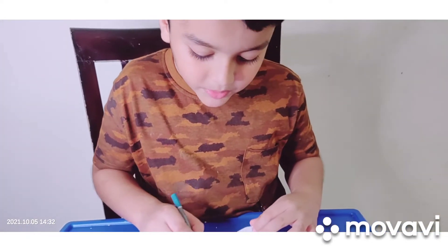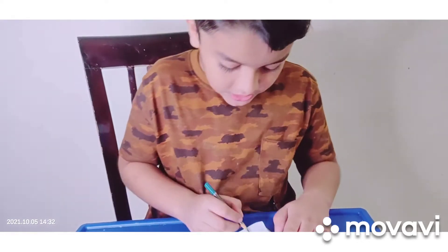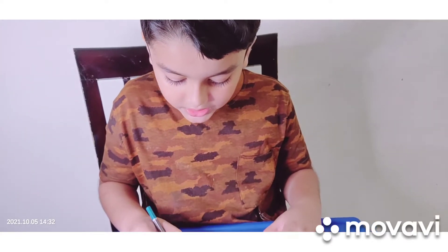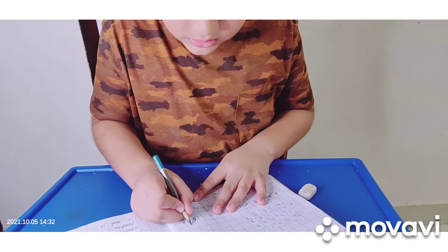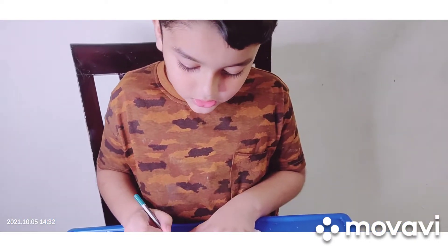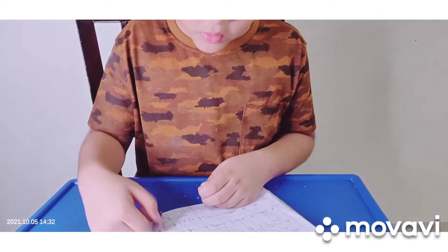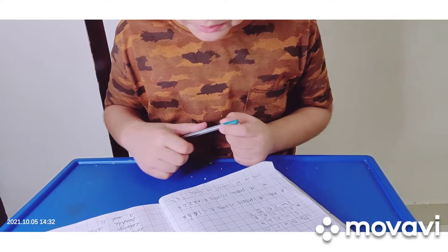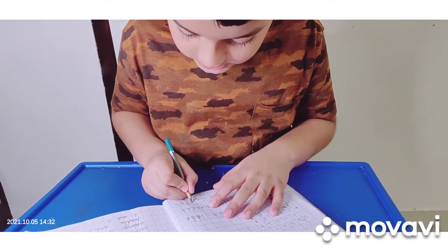Number of people in colony A is 1,656. Number of people in colony B is 1,326. Total number of people in colony A and B: 6 plus 6 is 12. 5 plus 2 is 7, but 1 carry is 8. 6 plus 3 is 9. And 1 plus 1 is 2.